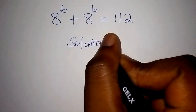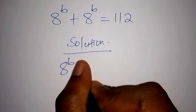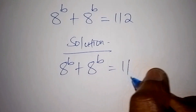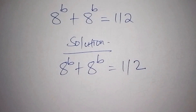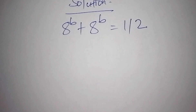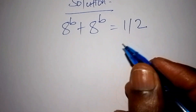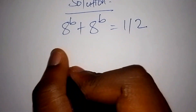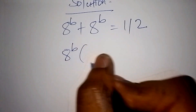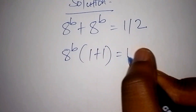So in the solution we have 8 to the power of b plus 8 to the power of b equals 112. The first step is to factorize 8 to the power of b plus 8 to the power of b. This can be written as 8 to the power of b into bracket 1 plus 1, equals 112.